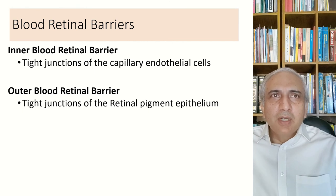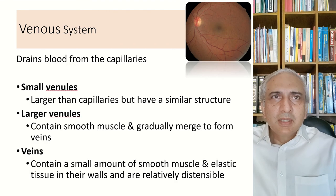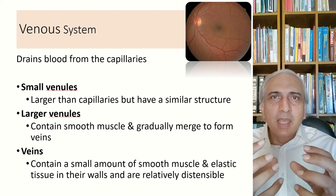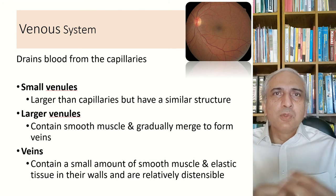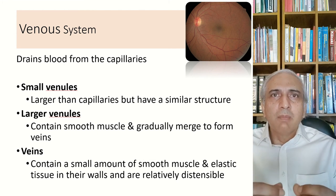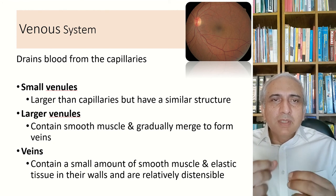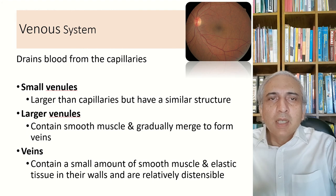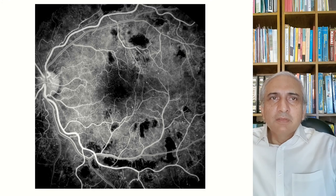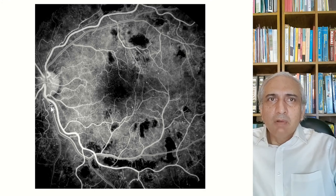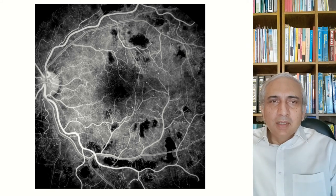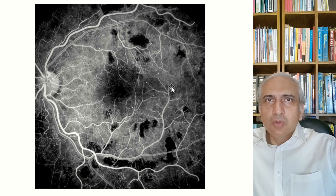The inner blood-retinal barrier consists of tight junctions of capillary endothelial cells; the outer barrier is the tight junctions of the RPE. The venous system drains capillaries through small venules, which merge into large venules containing smooth muscle, then into veins containing small amounts of muscle and elastic tissue. Micro-aneurysms in diabetic retinopathy tend to form on the venous side of the circulation.